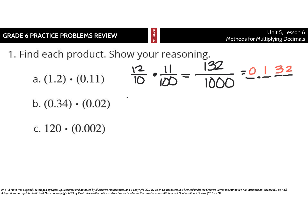In B, we have 34 hundredths times 2 hundredths. Multiply these numbers together, 34 times 2 is 68, and 100 times 100 is 10,000. And so, ones, tenths, hundredths, thousandths, and then we'll put the rest of our zeros in for those spots. So, 68 ten-thousandths.